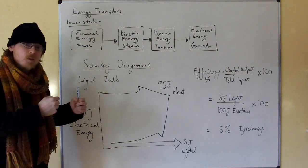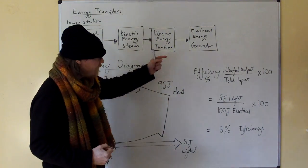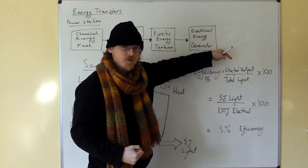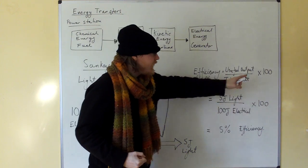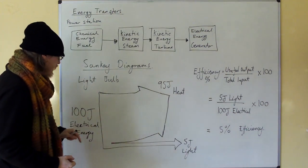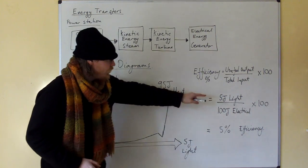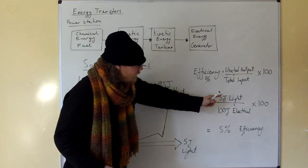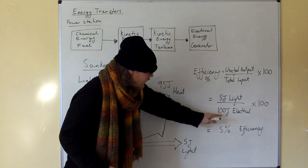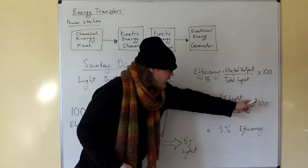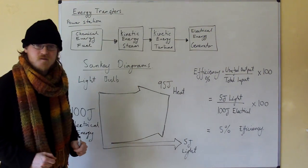What's the efficiency of this? The efficiency of a process is the useful output over the total input times by 100. So in this case, we put in 100 joules of electrical energy, but we only get 5 joules of useful light out. So 5 joules of light divided by 100 joules of electrical energy times 100 gives us 5% efficiency.